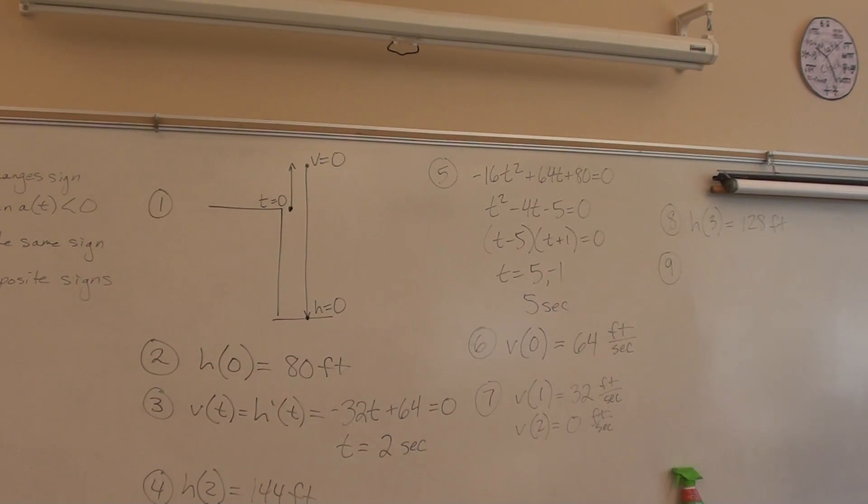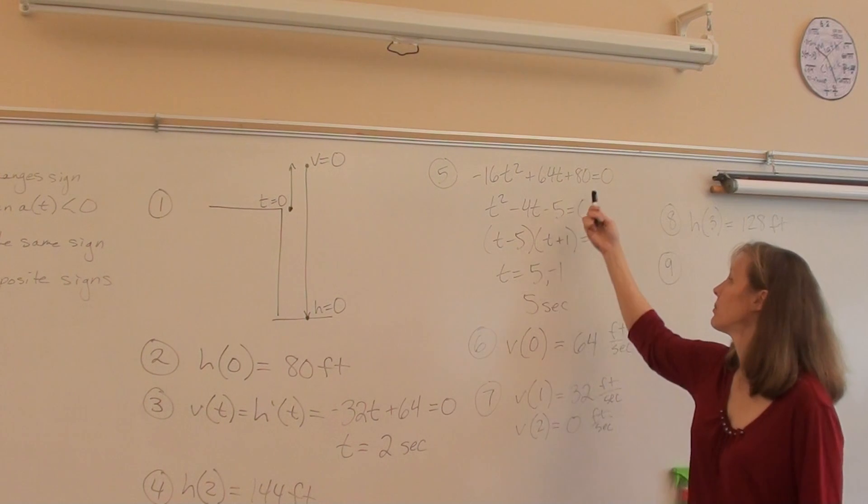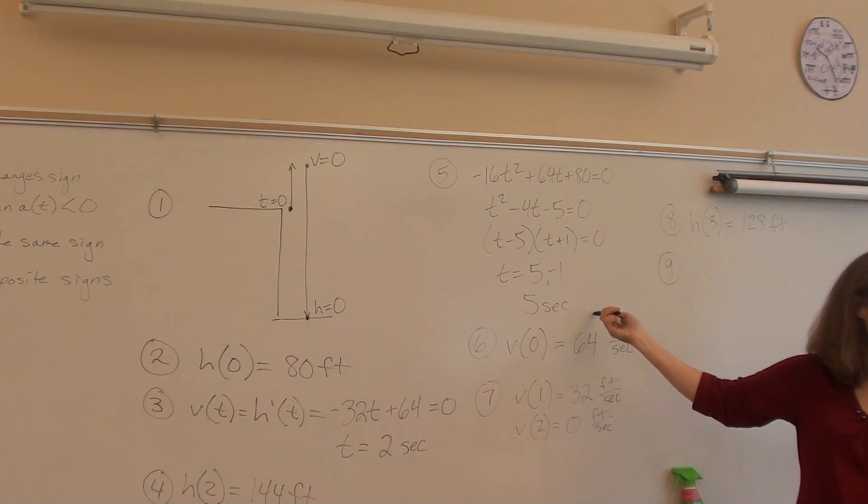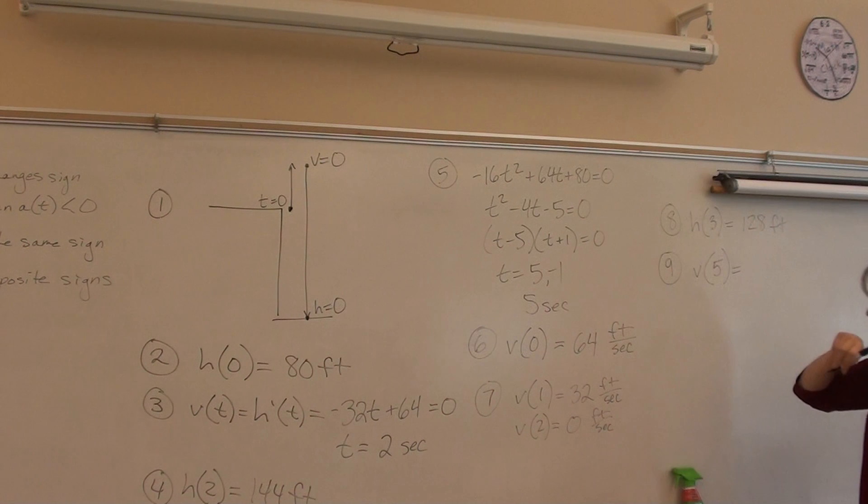What is the speed when it hits the ground? Is there a formula we have for speed? What's the only thing we know about speed? Speed is the absolute value of velocity. So first, we're going to have to find the velocity when it hits the ground. Well, what do we know about when it hits the ground? The height is zero. And to find where the height was zero, we found five seconds. So we're looking for the velocity at five seconds. So that's negative 32 times five, negative 160 plus 64, negative 96. Sounds about right. Feet per second. So what's the speed? Positive 96. So velocity is negative because it's going down, right? Speed is the absolute value of velocity.